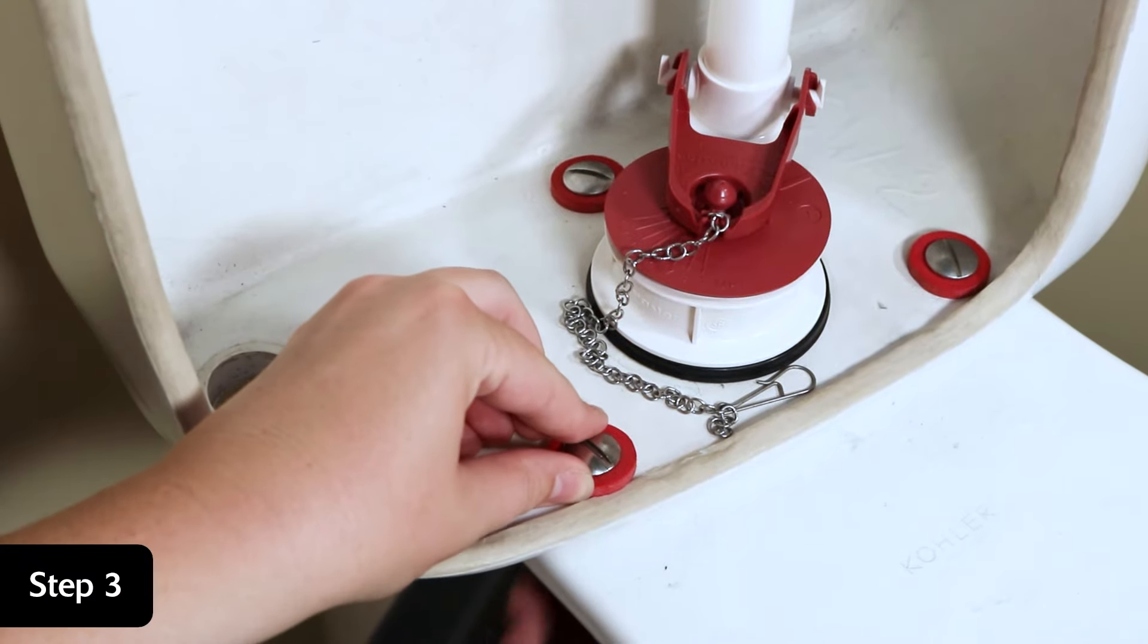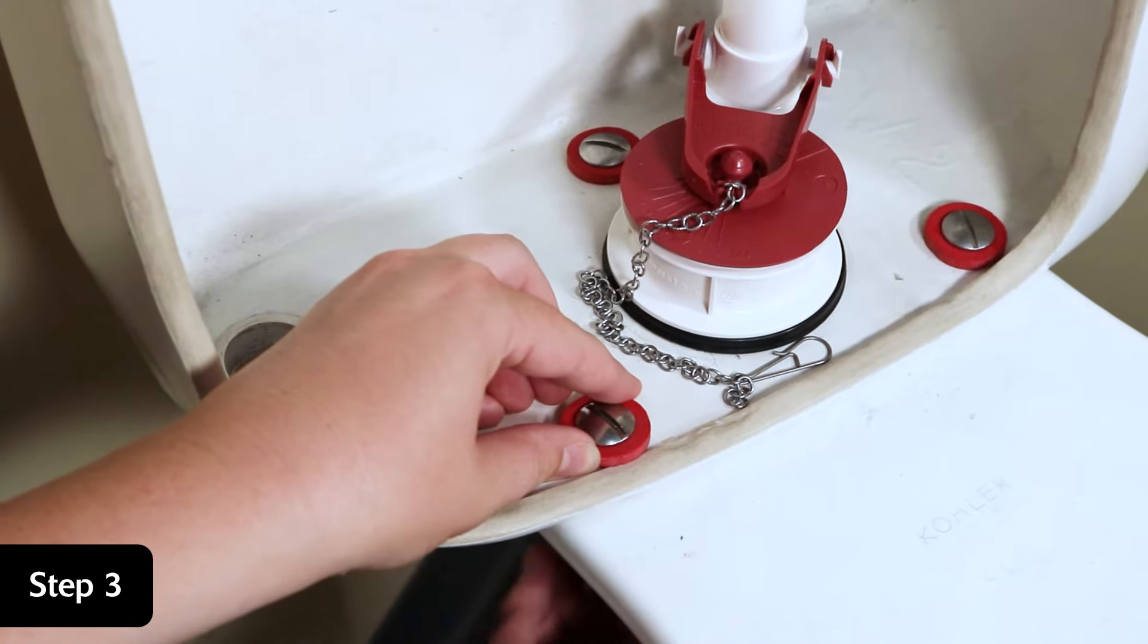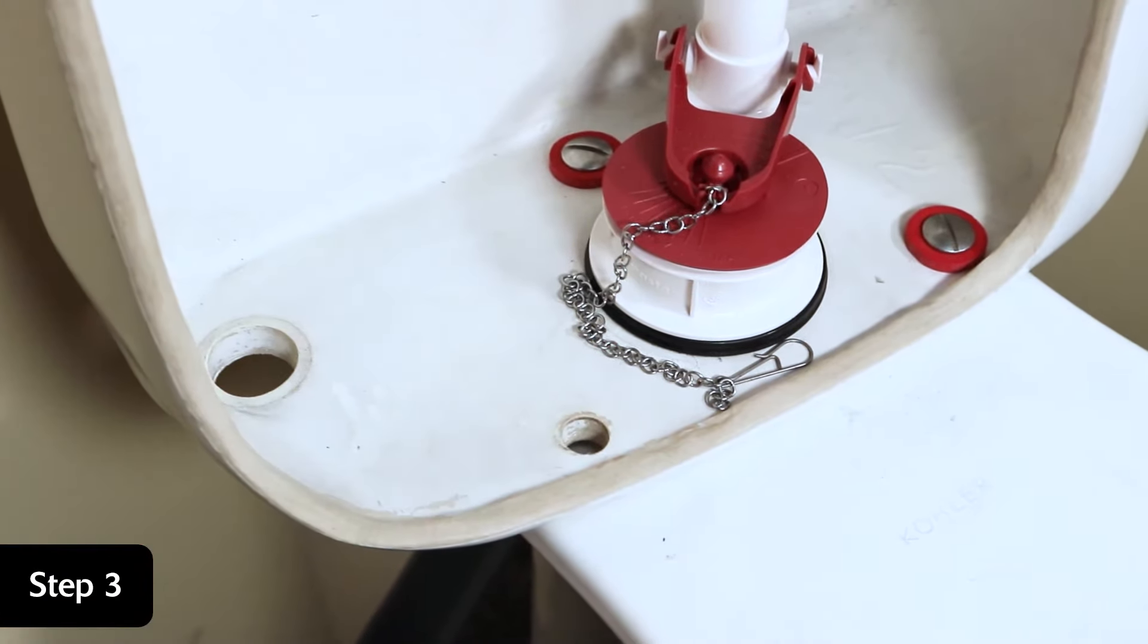Locate and remove all old nuts, bolts, and washers from the tank. Carefully lift up on the tank and remove it from the bowl.